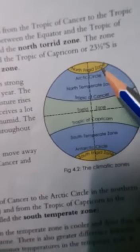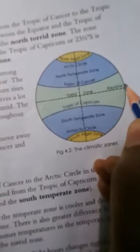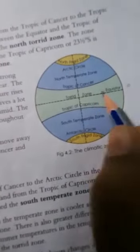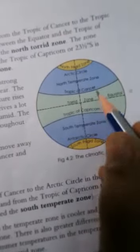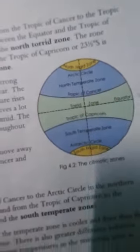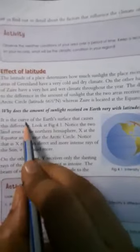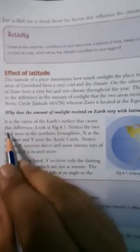So Greenland is located at the Arctic Circle, as you can see here, at the latitude of 66.5 degrees north, while Zaire is located at the equator of latitude 0 degrees. Sunlight directly enters at the equator, so that area is very hot compared to Greenland. Why does the amount of sunlight received on earth vary with latitude? It is the curve of the earth's surface that causes the difference.